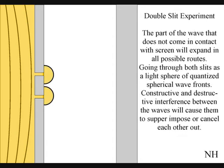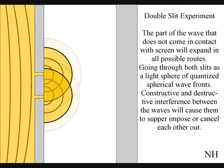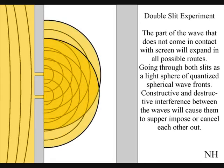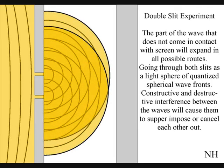The part of the wave that does not come in contact with the screen will expand in all possible routes, going through both slits as two light spheres of quantized wavelengths. Constructive and destructive interference between the waves will cause them to superimpose or cancel each other out.